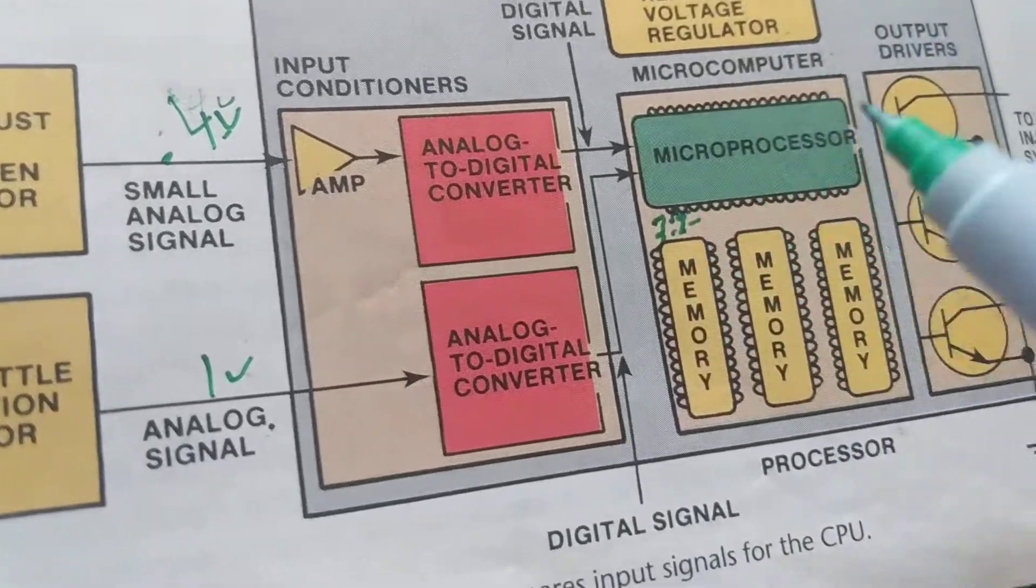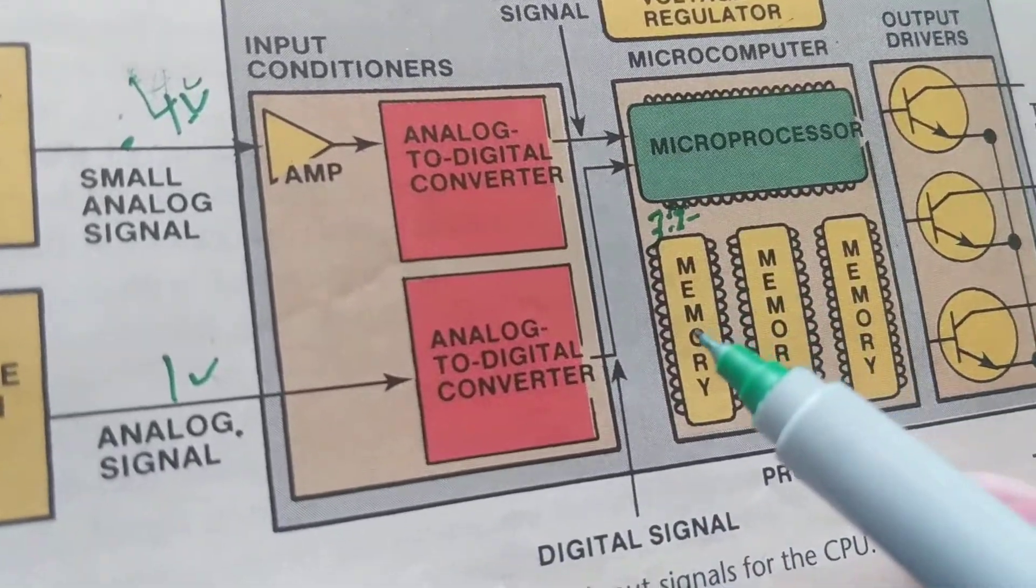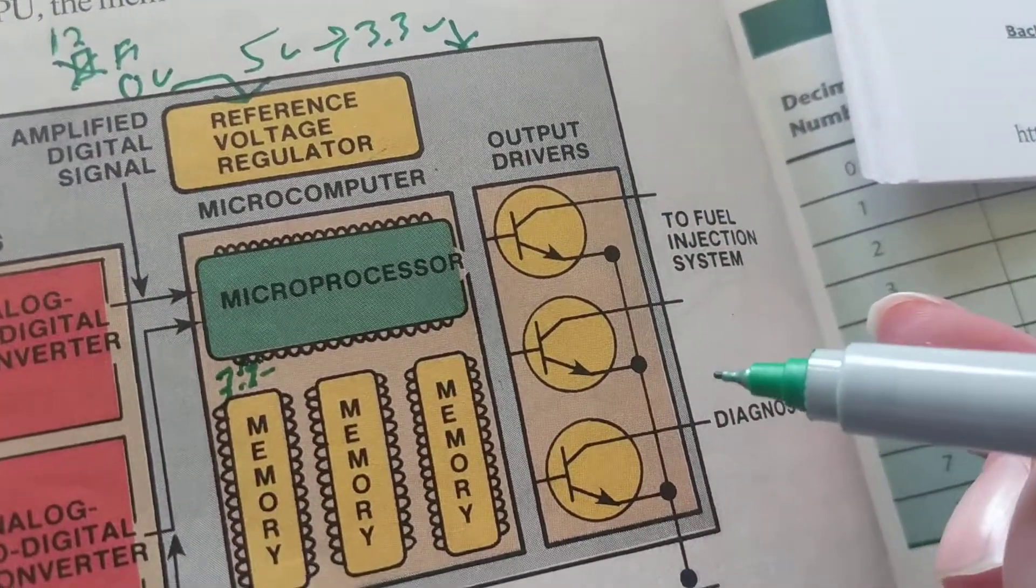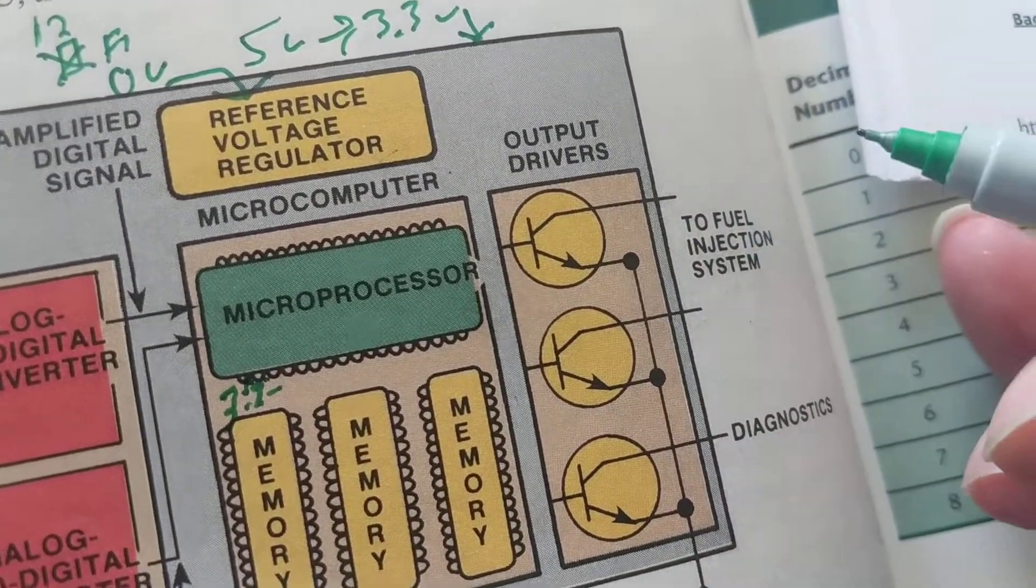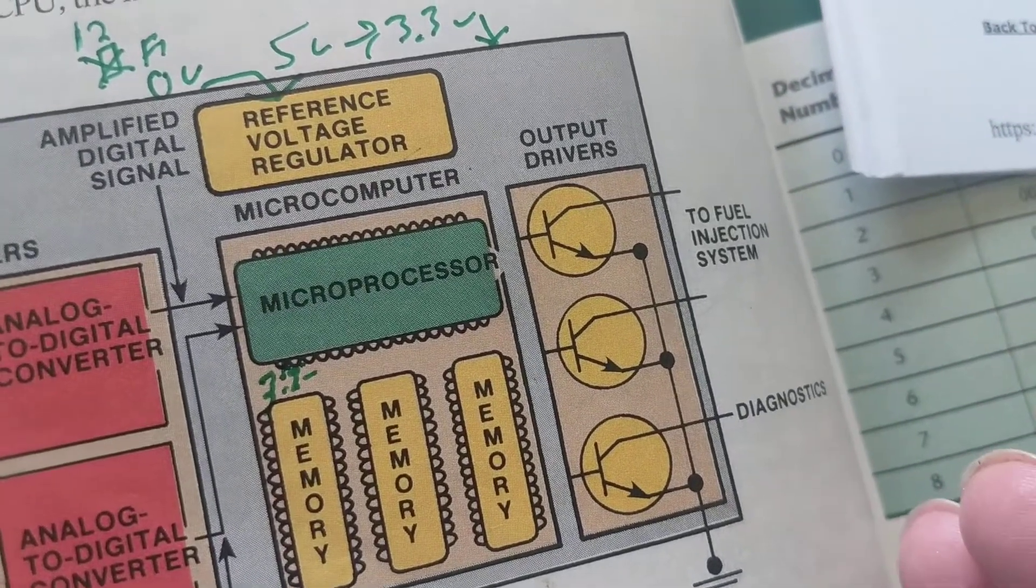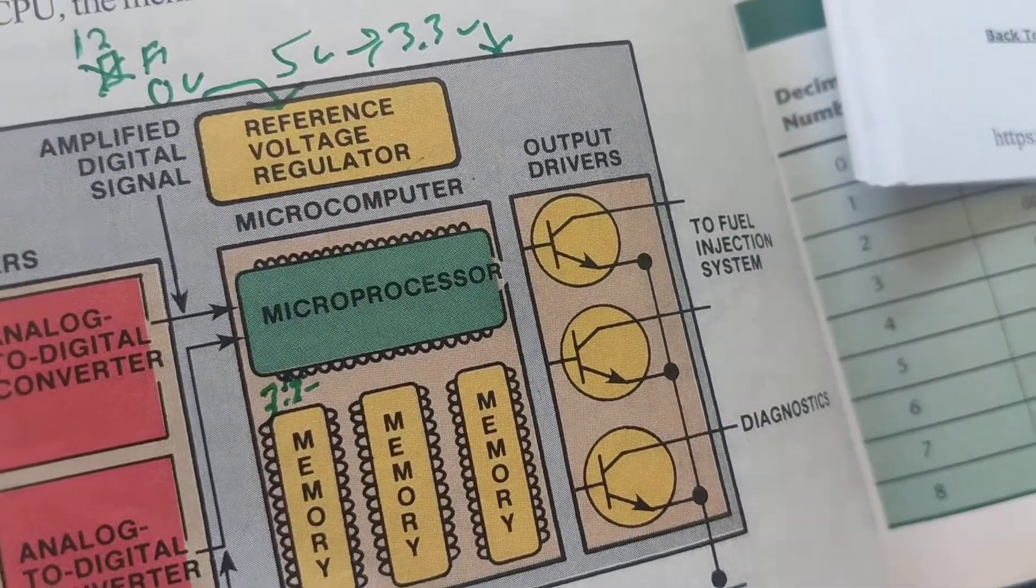It reacts to it by the instructions that tell it what to do. Those instructions will tell the transistors or the fuel injectors to allow more fuel or less fuel in order to have the proper air-to-fuel ratio.